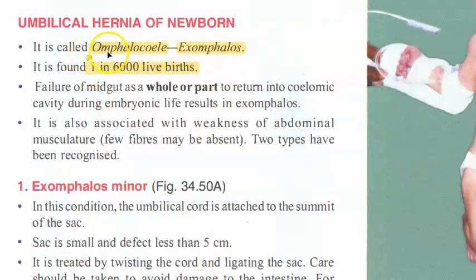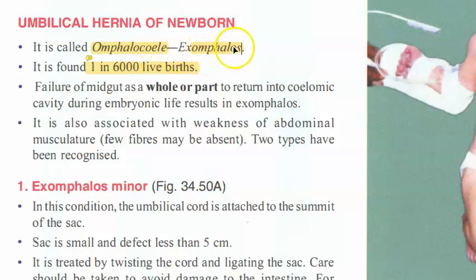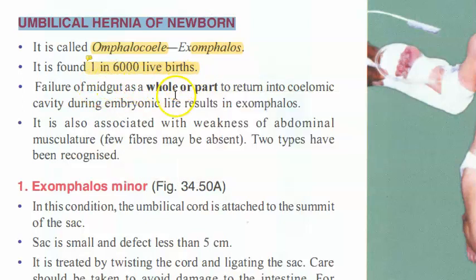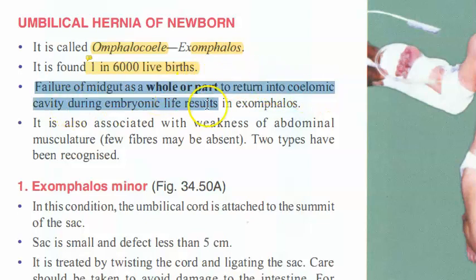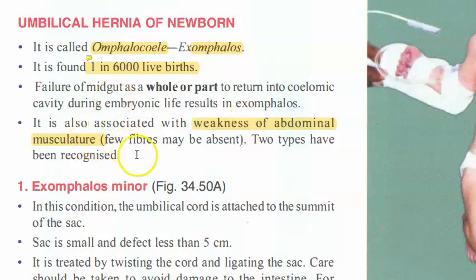In newborns, it is called exomphalos, or exomphalos. It is the umbilical hernia of the newborn, found in one in six thousand live births. These children can have some other congenital abnormality also. The cause is failure of the midgut, as a whole or part, to return into its coelomic cavity during embryonic life. Another reason can be weakness of the abdominal musculature.